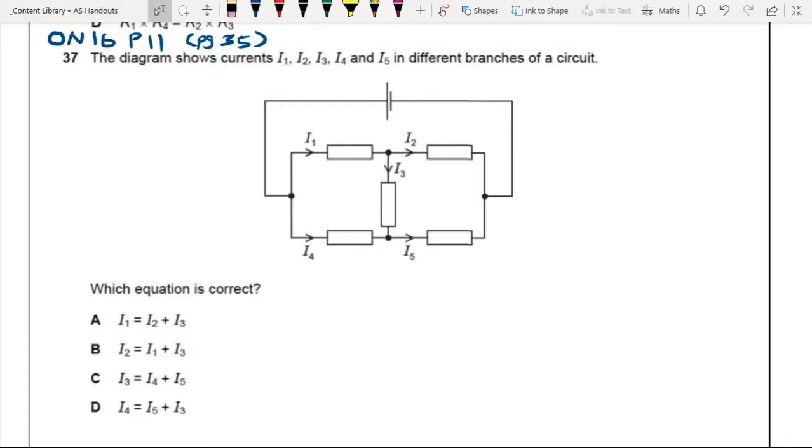Here on page 35 is a question. You know, current will split, but how does it split? Look at this circuit. The diagram shows current I1, I2, I3, I4, I5 in different branches of a circuit. Somehow we call them branches. Which equation is correct? So you look at this, you're kind of stunned there for a moment. How to know?